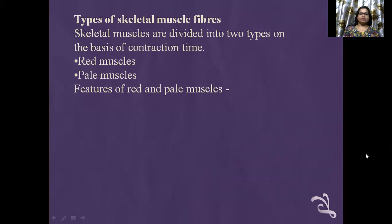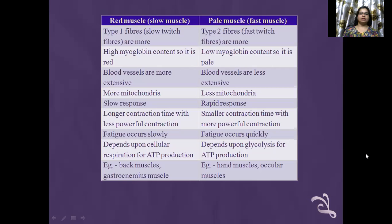Types of skeletal muscle fibers. Skeletal muscles are divided into two types on the basis of contraction time: red muscles and pale muscles. Red muscles are also called slow muscles and have type 1 fibers — slow twitch fibers — with high myoglobin content, which is why they are called red muscles. They have more extensive blood vessels, more mitochondria, slow response, lower contraction time with less powerful contraction, fatigue occurs slowly, and they depend upon cellular respiration for ATP production. Examples: back muscles or gastrocnemius muscles.